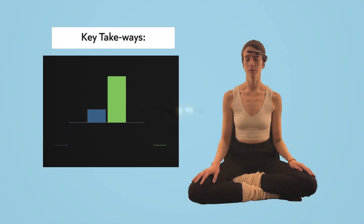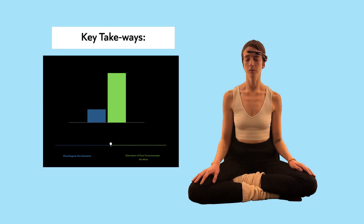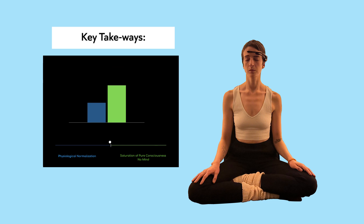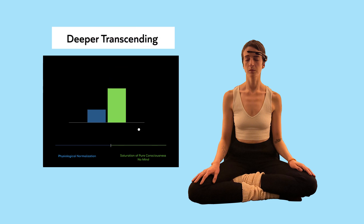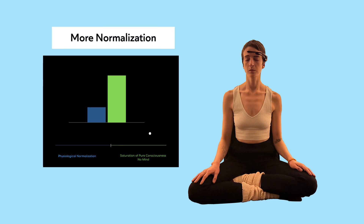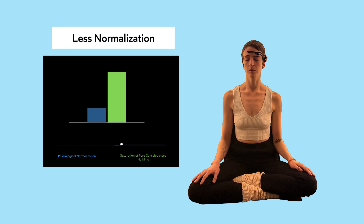Making it longer and harder to reach that optimal altitude. So the key takeaway is that your nervous system before you meditate has a direct impact on what you're going to experience — deeper transcending, shallow transcending, more normalization, less normalization. It all depends on your nervous system.